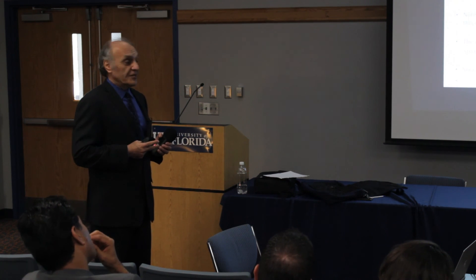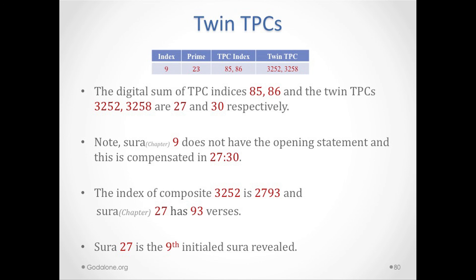Chapter 27 has two opening statements — two instances of 'In the name of God, the All-Gracious, the All-Merciful.' Chapter 27 verse 30 tells you exactly what it is — it refers to the letter that the Queen of Sheba receives from Solomon, which begins 'In the name of God, the All-Gracious, the All-Merciful.' The index of composite 3252 is 2793, and chapter 27 has 93 verses.